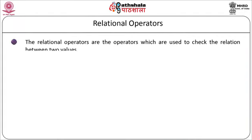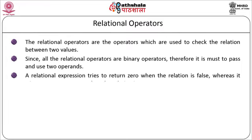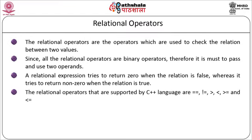Relational operators are used to check the relation between two values. Since all relational operators are binary, two operands must be passed. A relational expression returns 0 when the relation is false and a non-zero value when the relation is true. The relational operators supported by C++ are: equal to (==), not equal to (!=), less than (<), greater than (>), less than or equal to (<=), and greater than or equal to (>=).